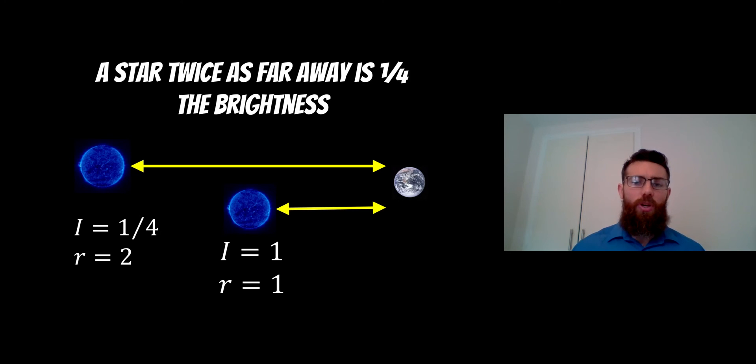If we have two stars where one star is located twice the distance away from the other, the one that's furthest away is going to be a quarter of the brightness of the one closest. If you move twice as far away, the brightness decreases to a quarter. That's the relationship there, and we can use this to work out a distance to that star.